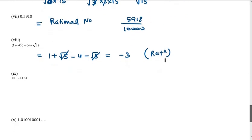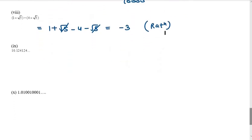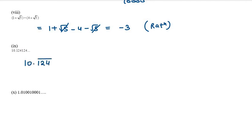The 9th one is 10.124124... We can write it as 10.124̄ because 124 repeats. Numbers with a repeating bar are rational numbers.